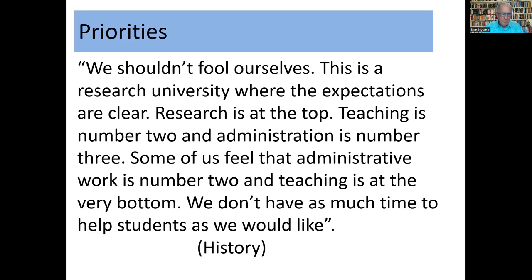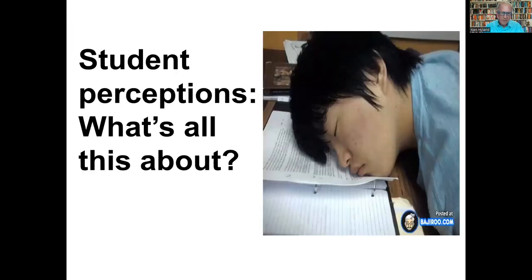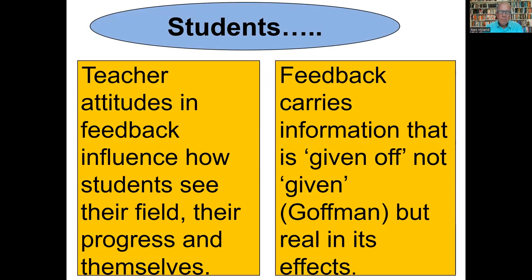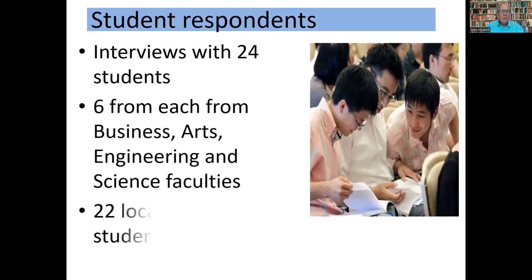Turning to the students, these teacher attitudes influence the feedback they give or don't give, and so affect how students see their field of study, see their progress, and see themselves as learners. It's important to say that feedback carries meanings that are accidentally communicated — what Goffman calls information given off rather than given. It's accidental, but it's real in its effects. In the second part of the talk, I'm interested in how students interpreted their feedback rather than how it is intended. We interviewed 24 undergraduates, six from each of the same four faculties — twenty-two were local students and two were mainland Chinese students.